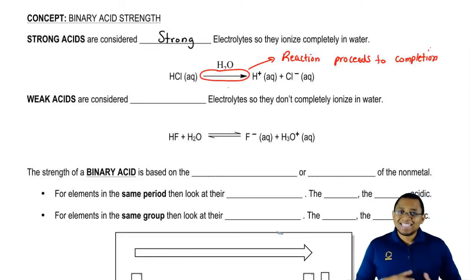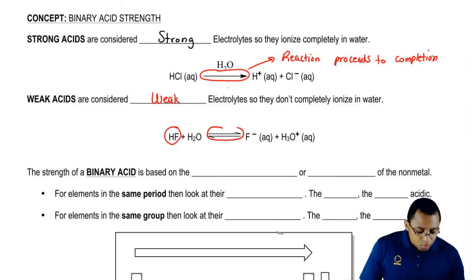We're going to say weak acids and weak bases are considered to be weak electrolytes. So they don't completely break up. You'll notice here that HF is our weak binary acid and here we don't have a straight arrow going towards the right. Here we have double arrows. We're going to say here, instead of going to completion, an equilibrium is established.